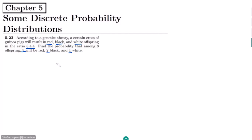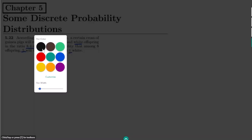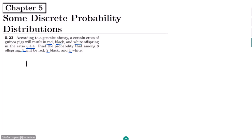This is clearly the problem of multinomial probability. In multinomial probability, let me write the formula for finding out the probability for red equal to 5, black equal to 2, and white equal to 1.